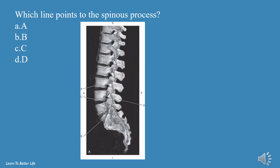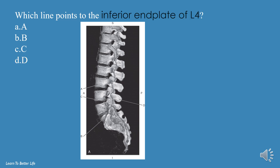Which line points to the spinous process? A, B, C, or D? The answer is D. Which line points to the inferior end plate of L4? A, B, C, or D? The answer is C.